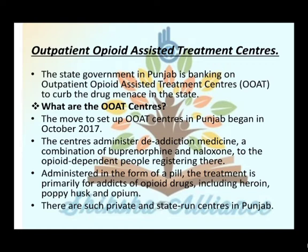The move to set up OOAT centers in Punjab began in October 2017. The centers administer addiction medicine, which is a combination drug. The treatment is primarily for addicts of opioid drugs including heroin, poppy husk and opium. Medicine ko ek pill ke taur par administer kiya gaya tha.